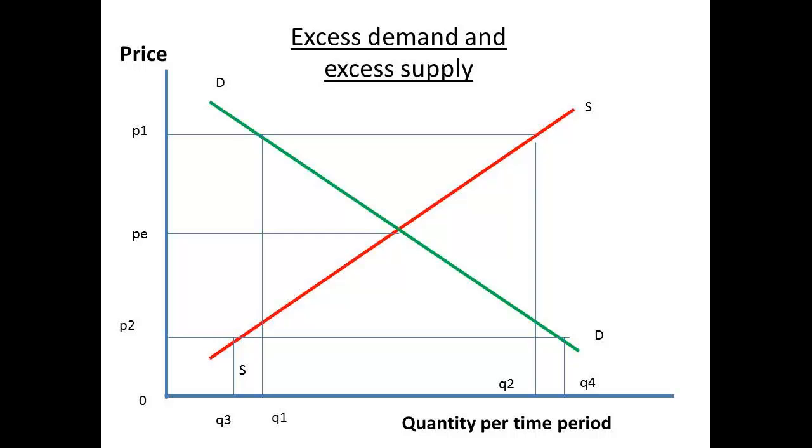What happens when the price of X is at P2? A quantity Q3 of the good X is supplied, but the demand for good X is at Q4, which is much higher. There is an excess of demand over supply. The producers may raise the price of X. We can say that an excess of demand causes an upward pressure on the price of good X.